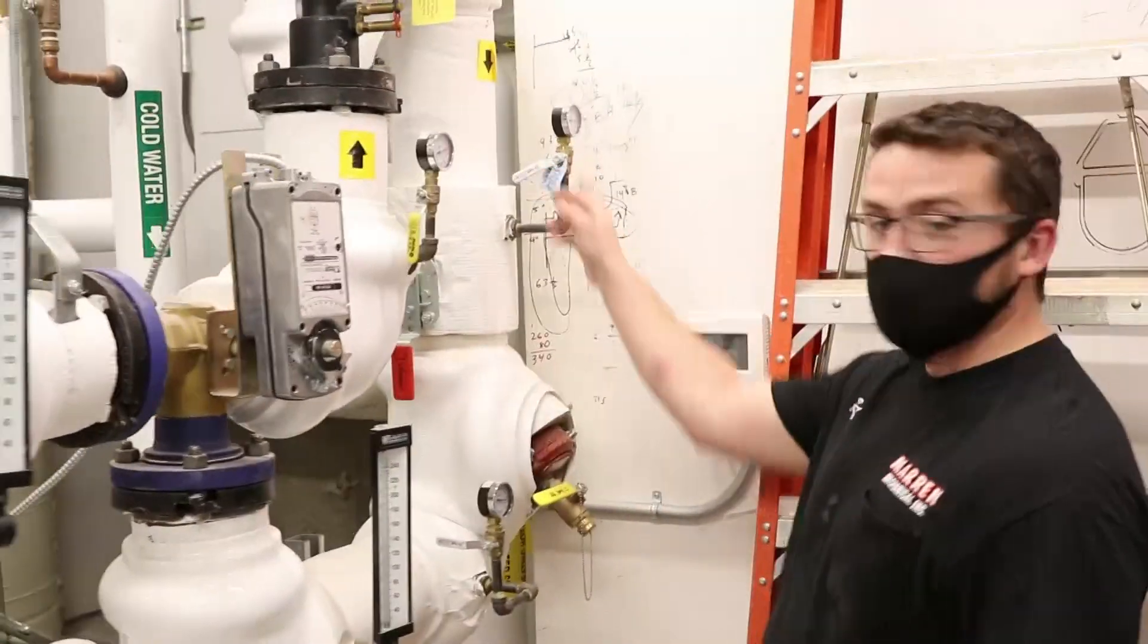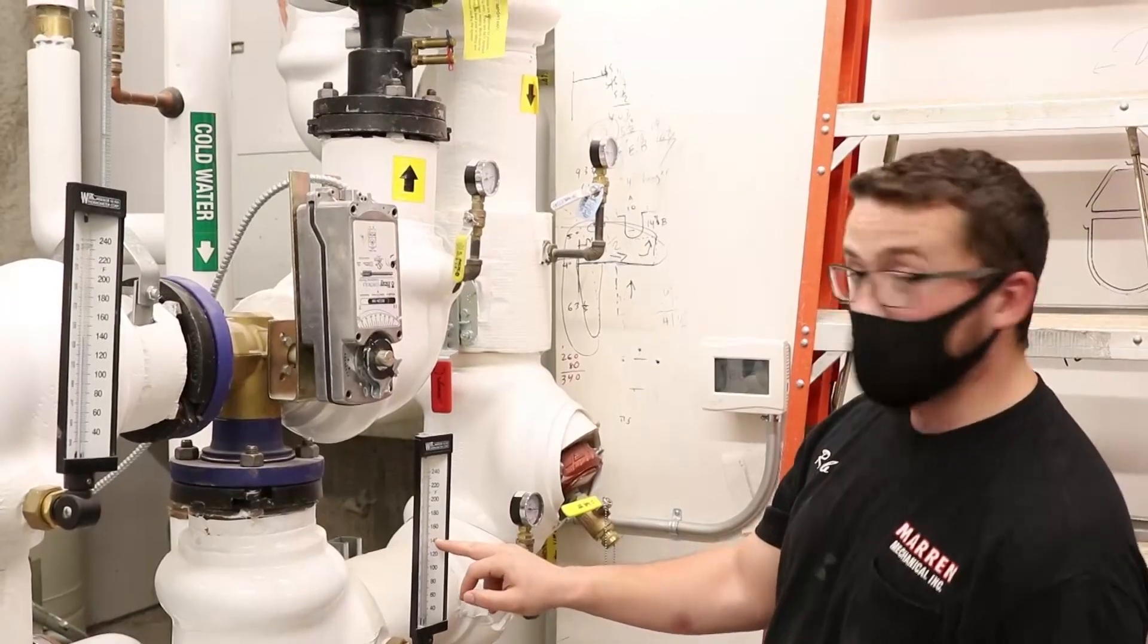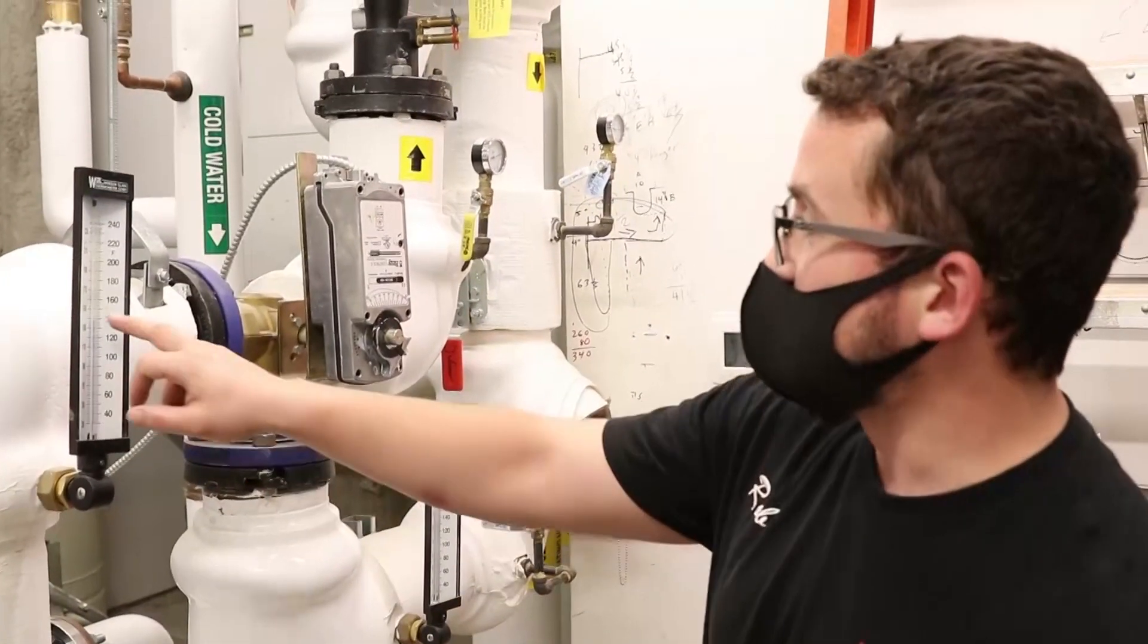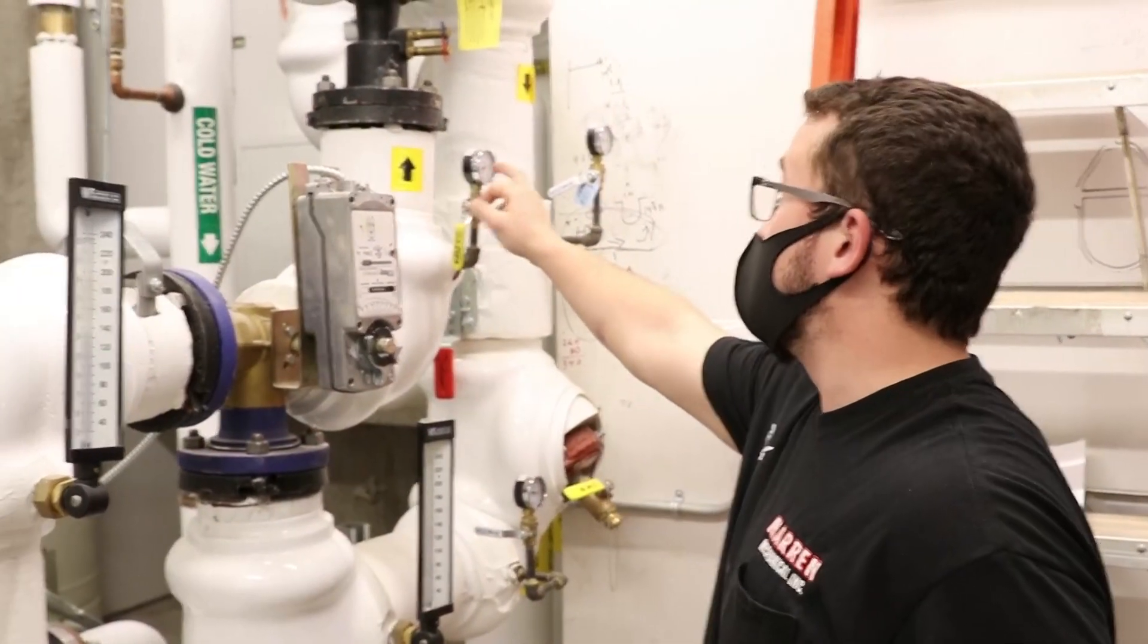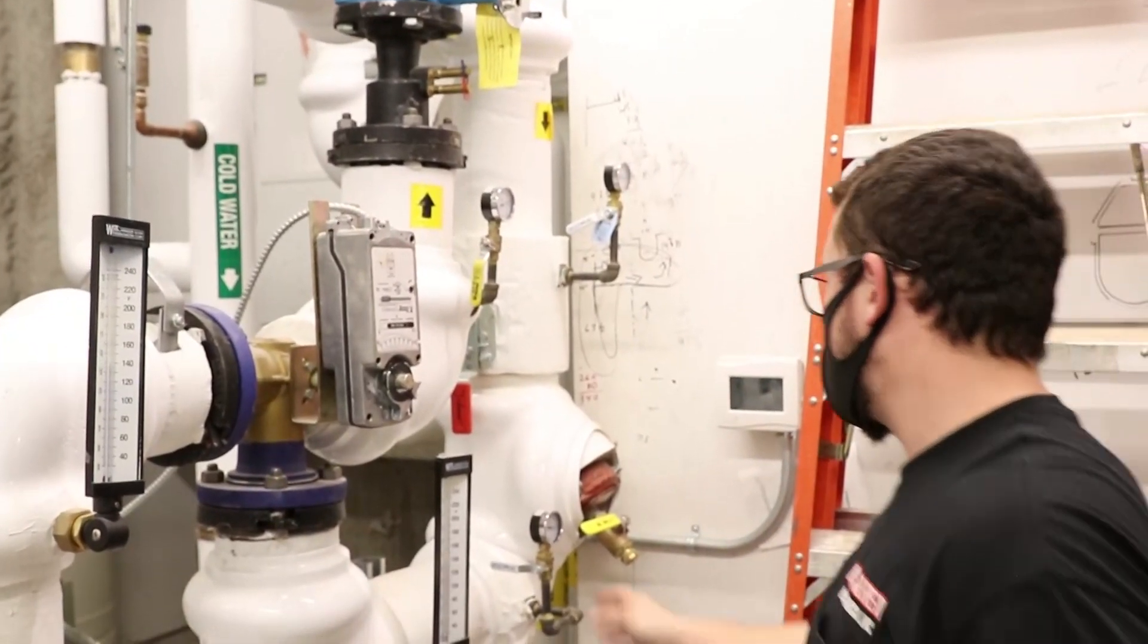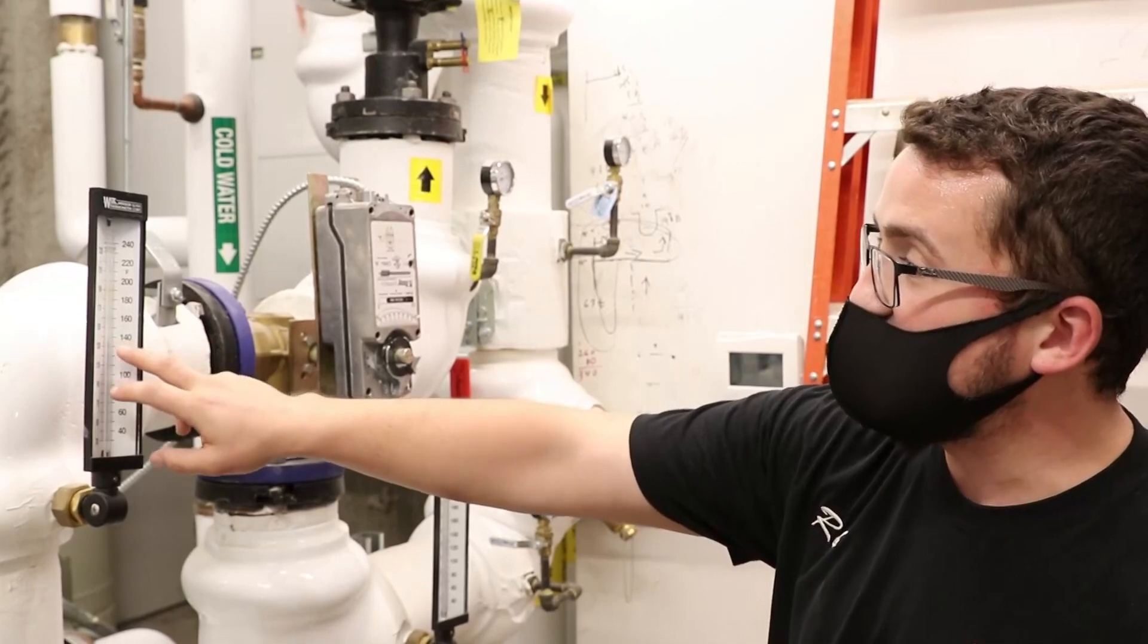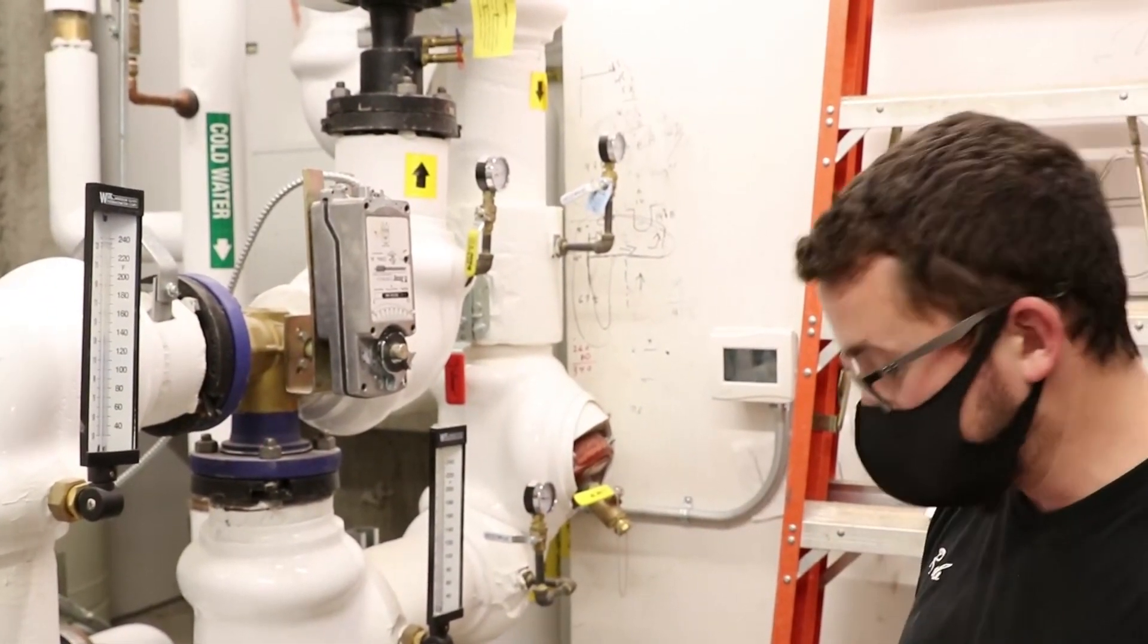This is telling you the water pressure coming into the heat exchanger, the water temperature of the boiler water coming into the heat exchanger. Here's the temperature of the water leaving the heat exchanger and the pressure of the water leaving the heat exchanger as it goes back to the source. You're going to want to take note of what these numbers are and make sure that these gauges are accurate and that they haven't failed and that they're still providing you with good and useful information.